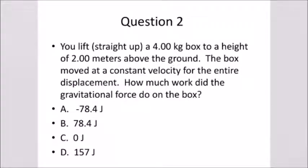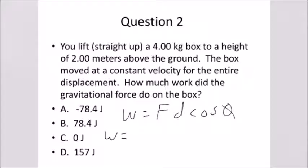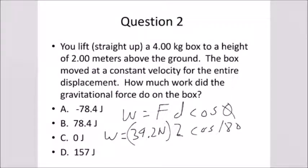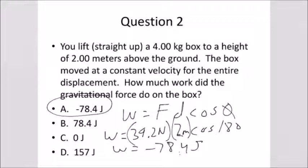Here's question two, a very similar problem. This time you're asking how much work did the gravitational force do. Gravity is also doing work on the box. We calculate it the same way: F times d times cosine theta. Again there's no net force, so the force applied by gravity is still 39.2 newtons. The box is still moving two meters. But this time the angle between the displacement and the force is 180 degrees. Cosine of 180 is negative one, so 39.2 times two times cosine of 180 gives negative 78.4 joules. When something moves in the opposite direction of the force, the work is going to be negative.